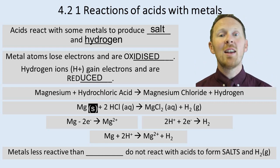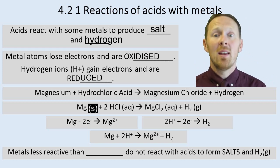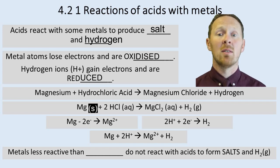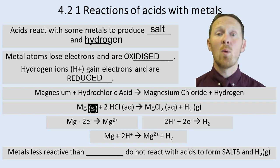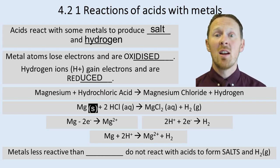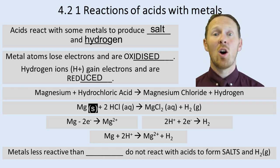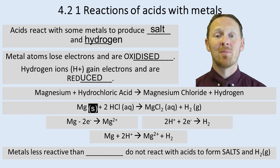If you look at the final equation shown, this is an ionic equation - it shows the ions that are involved in the reaction. The ions that don't change, the chloride ions, are excluded from this reaction. They don't have a change in oxidation number; they're not oxidised and reduced, so they don't appear in the ionic equation.